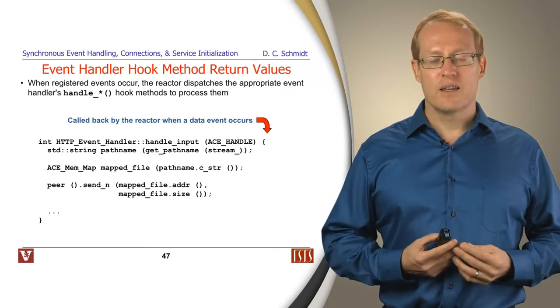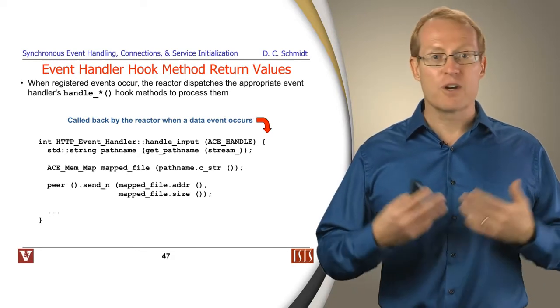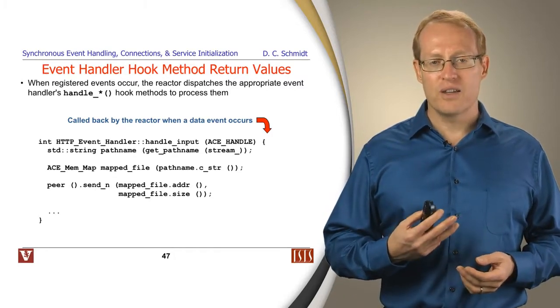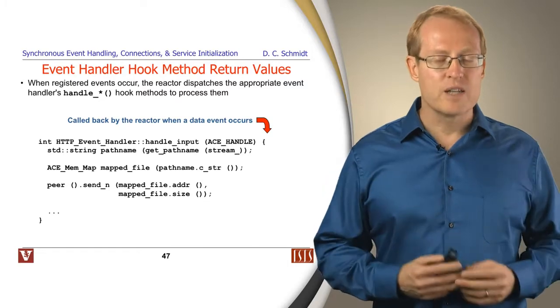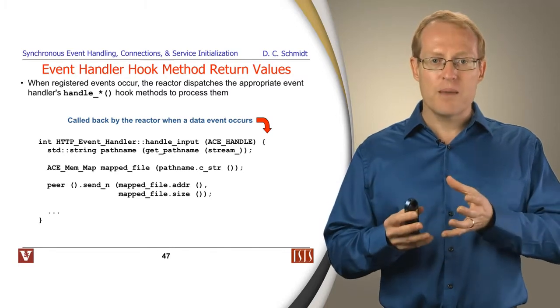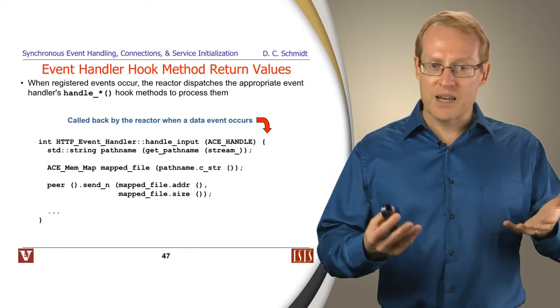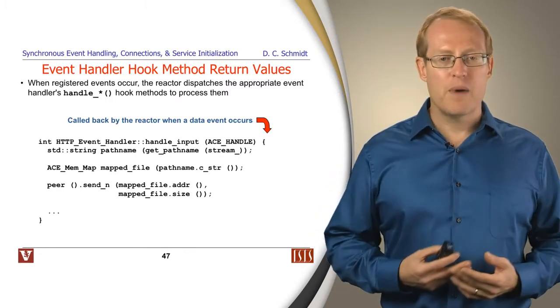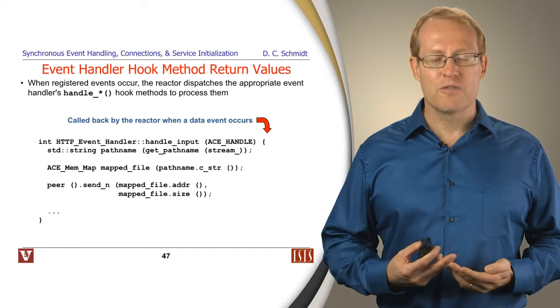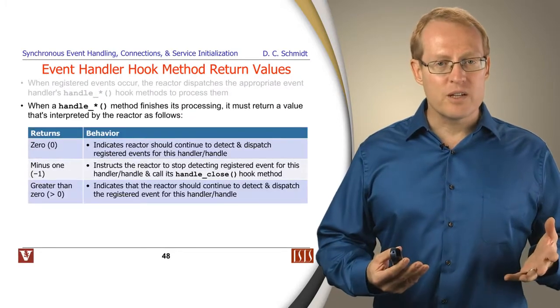There's also return values that the hook methods will give back to the reactor framework after they've finished processing whatever it is they're doing when an event shows up. For example, here's the handle input method that gets called back on the HTTP event handler. We'll look at this in more detail later, but what it's essentially doing is it's extracting the URI from the incoming stream, and then it goes ahead and memory maps a file that corresponds to the content designated by that URI, and then it transmits that file back to the client. When it's done, it returns various values and it indicates whether it succeeded or failed. So we would give back certain values to say if this worked or if it didn't work.